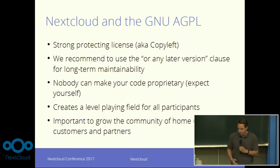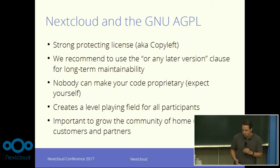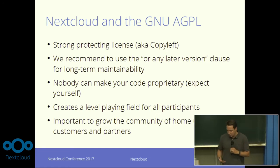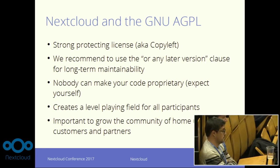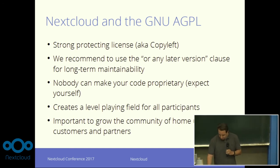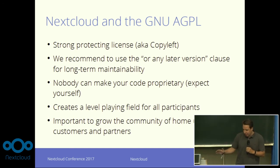With Nextcloud, we chose the GNU AGPL, which is a strong protecting license, so it makes sure that the software will always stay free. We also recommend using the 'or any later version' clause because, as I said at the beginning, that's exactly what allows us to keep the legal side of the project maintainable in the long run. We have no contributor agreement or anything else, so everybody has exactly the same rights on the code — there is no differentiation. Nobody can make the code ever proprietary. You can, of course, take the parts you write and use them in any other program you want, because you always keep the copyright on your own work. That's really important to create a level playing field and to grow the community with users, customers, and partners all together.